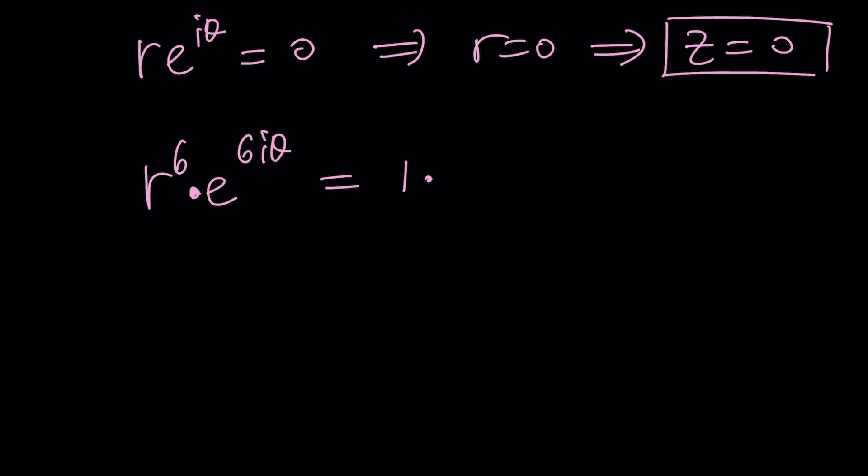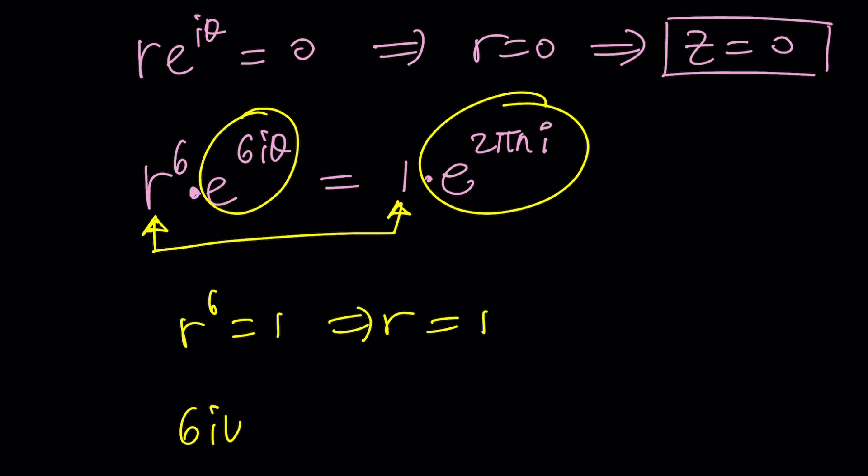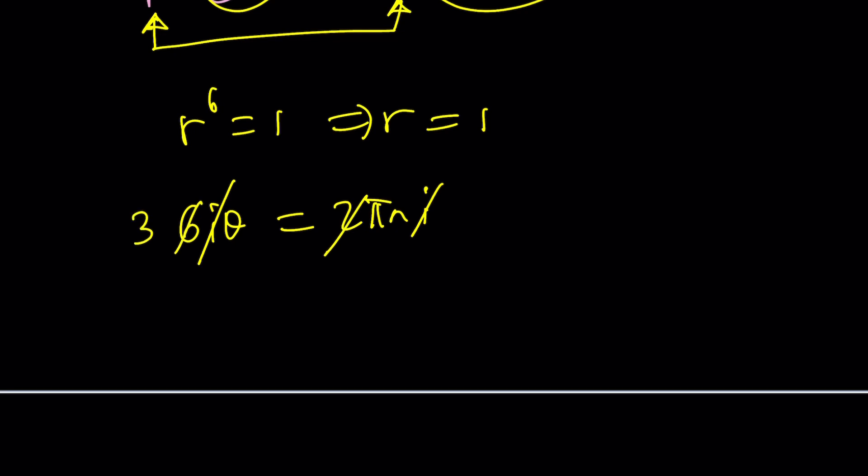We're going to proceed with the other solutions. We have to solve r to the six e to the six i theta equals one. We can write one in polar form, the complexification of one. One can be written as one times e to the power two pi n i. We can compare the moduli: r to the six equals one, but r cannot be negative, so r needs to be one. From here we get six i theta is two pi n i. Theta equals pi n over three.